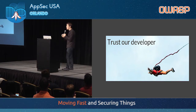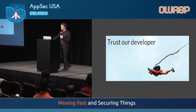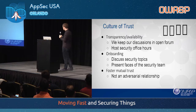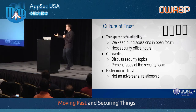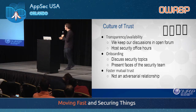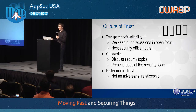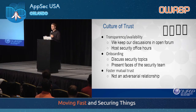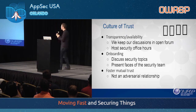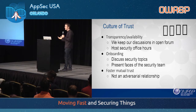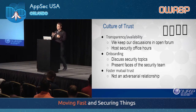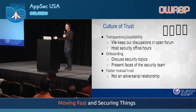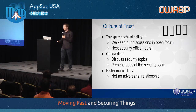One of our biggest goals is to make the development teams security self-sufficient so we can focus on harder problems. With this culture of trust, we're trying to have transparency and availability. We have an open forum, open discussions, and we host security office hours — once a week, a 90-minute session where anyone can drop in, see the team, and ask questions. We're also available on demand. For onboarding, we present our security team as people who are there to help. All of this builds mutual trust. If security is seen as an adversary, accomplishing goals becomes extremely difficult for both teams.